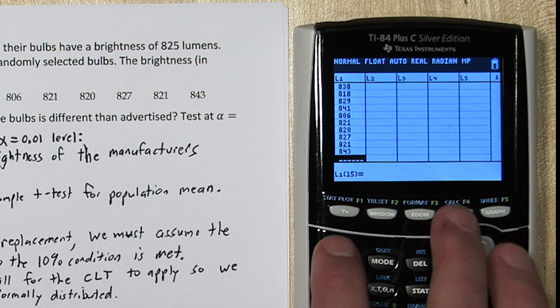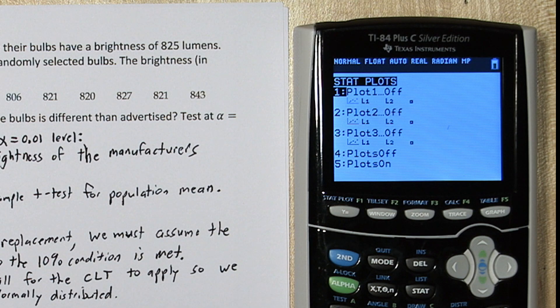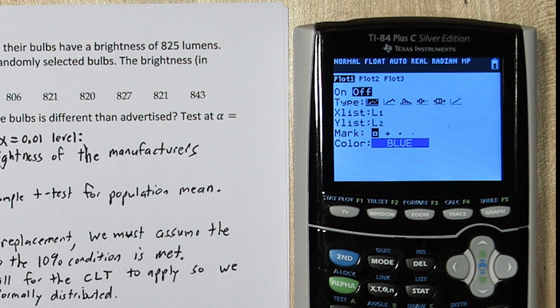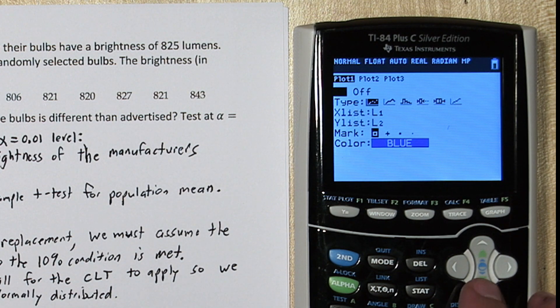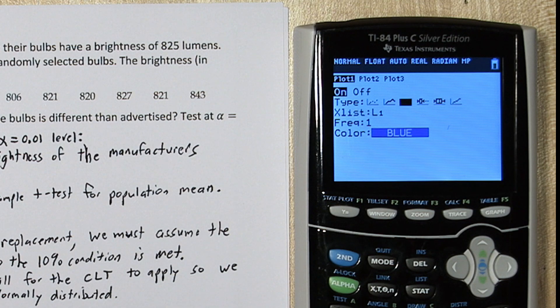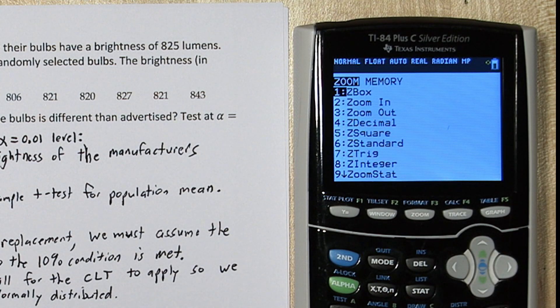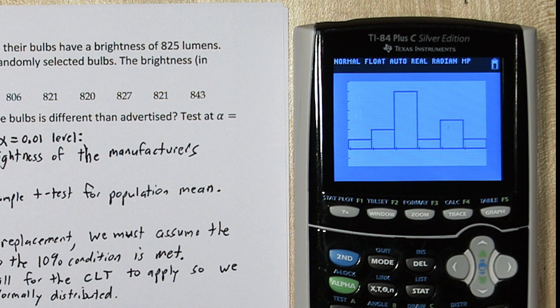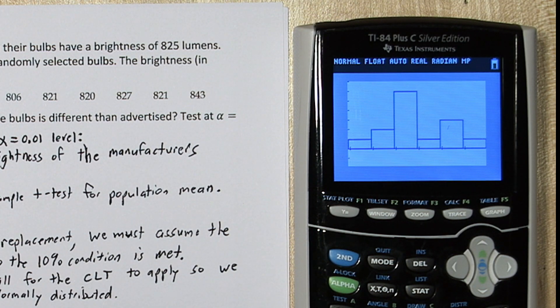Alright, now we need to check that they're roughly normally distributed. Let's start with the histogram. So press 2nd and y equals to get to the STAT plot menu. Press ENTER and turn plot 1 on. Now for type, scroll over to histogram. And we're going to press zoom and the number 9. Alright, this looks unimodal and roughly symmetric, so that's a good sign. It does appear roughly normal at this time, or at least not super non-normal.